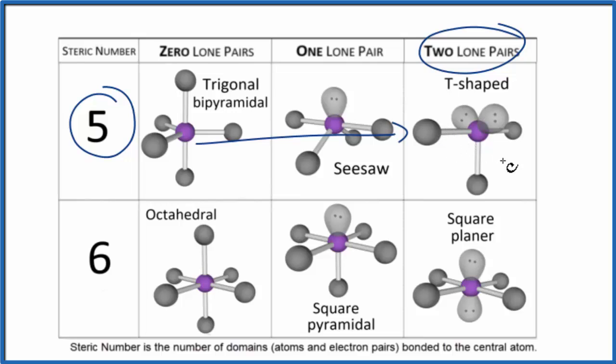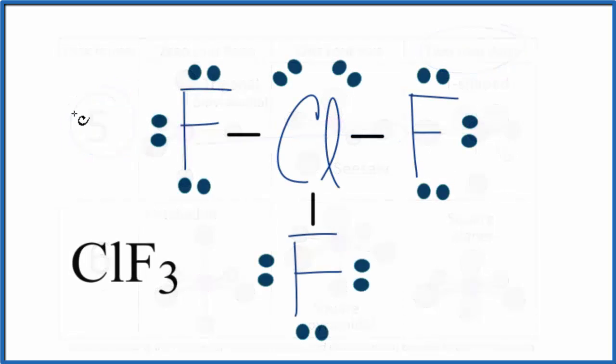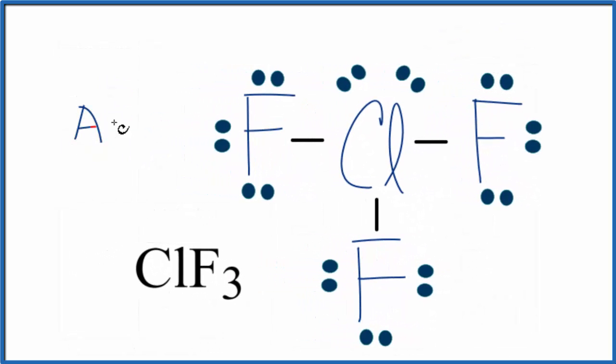The other way to find the molecular geometry is to use the AXE notation. So A, that's the central atom, the chlorine. X, the atoms around it, one, two, three. And E, those are the lone pairs. We have one, two lone pairs. So we'd have AX3E2.